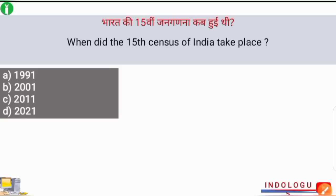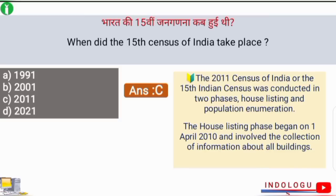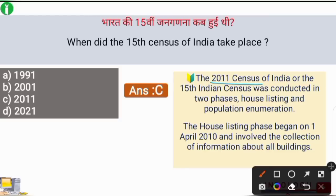Next question: when did the 15th census of India take place? The correct answer is option C — 2011. The 2011 census was our country's 15th census, conducted in two phases: house listing and population enumeration. The house listing phase began on 1st April 2010.